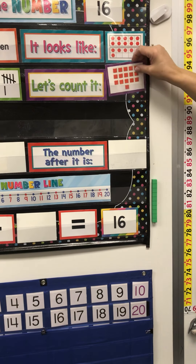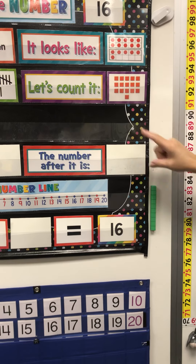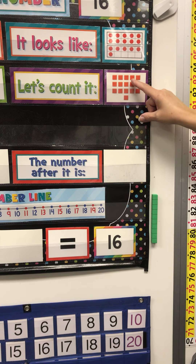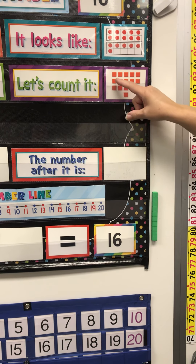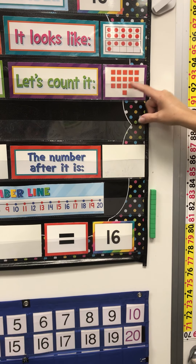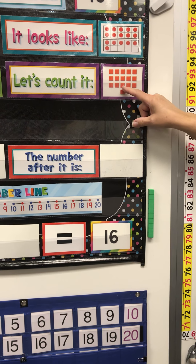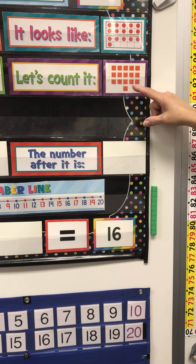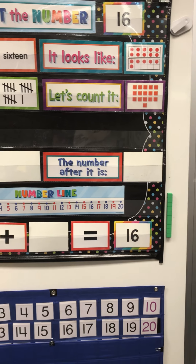Let's see if we have 16 squares. 1, 2, 3, 4, 5, 6, 7, 8, 9, 10, 11, 12, 13, 14, 15, 16. We do have 16.